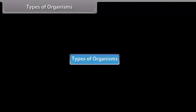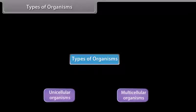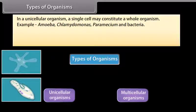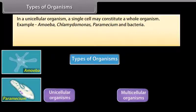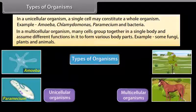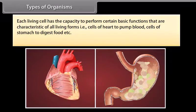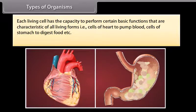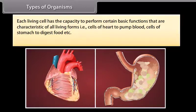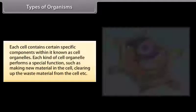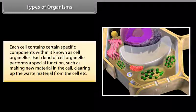Types of organisms: unicellular organisms and multicellular organisms. In unicellular organisms, a single cell constitutes a whole organism. In multicellular organisms, many cells group together in a single body and assume different functions to form various body parts — for example, some fungi, plants, and animals. Each living cell has the capacity to perform certain basic functions characteristic of all living forms, such as cells of the heart to pump blood and cells of the stomach to digest food. Each cell contains certain specific components known as cell organelles.